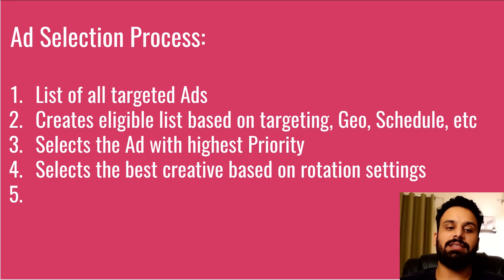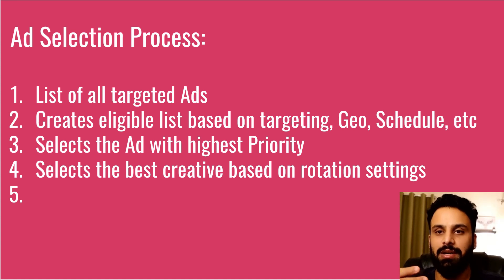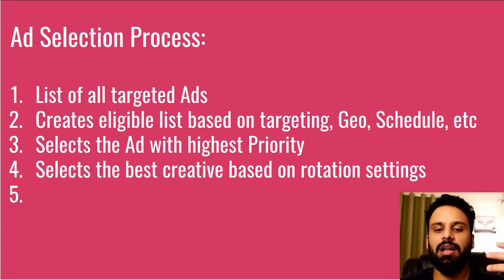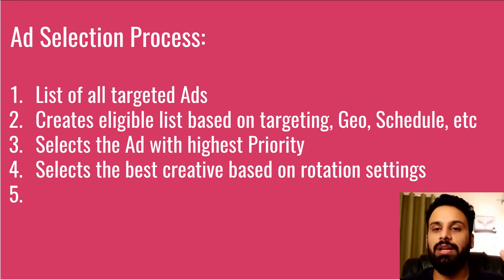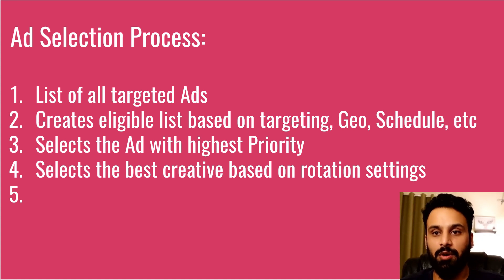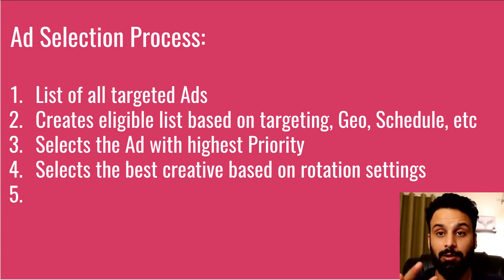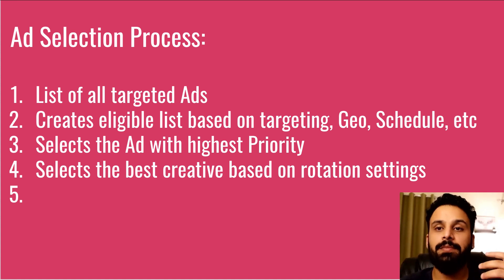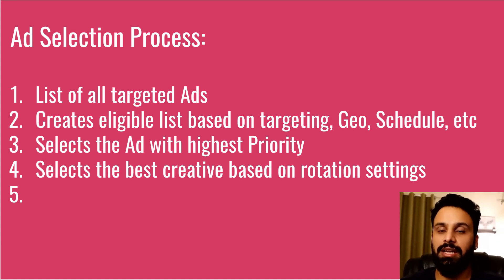The ad serving process steps: First, Campaign Manager lists all ads targeted to that particular placement — say there are two, three, four, or five. Second, it creates an eligible list based on targeting: geo, schedule, etc. For example, if the English ad is targeted only to the Europe region and the Arabic ad to the MENA region, and someone visits BBC.com from Europe, only the English ad will be eligible.